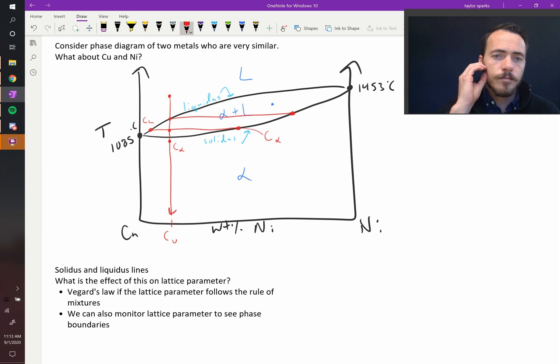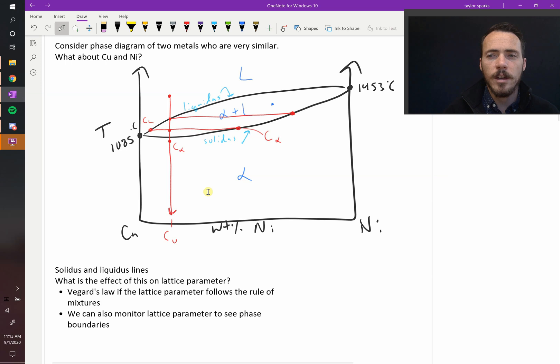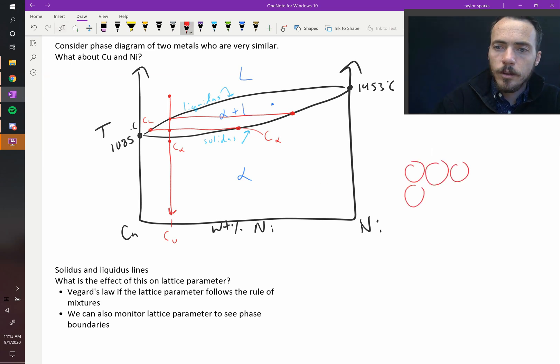Now, it's very common to see instances where you have a non-perfect solid solubility. In this example, it's completely soluble all the way across. So again, let's go back to our picture of an atom. Let's assume that copper and nickel have some sort of arrangement of atoms.